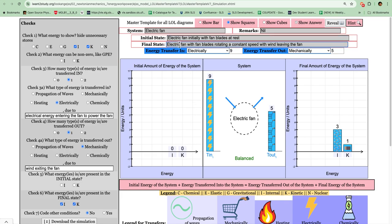So the final state could be that the electric fan have the rotating blades at a constant speed and then the wind is actually leaving the fan. And then if you want to even be clearer, you can say that the fan heats up.